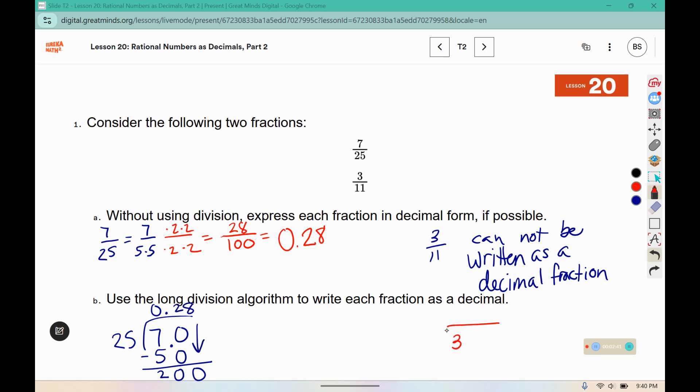For 3 11ths. 11 doesn't fit into 3, but it does fit into 30 two times, which gives us 8 left over. It fits into 80 seven times, giving us 3. And then 11 fits into 30 two times, giving us 22. That would leave us with 8. We bring down another 0 and we keep getting 2727. So this is going to be 27 repeating.